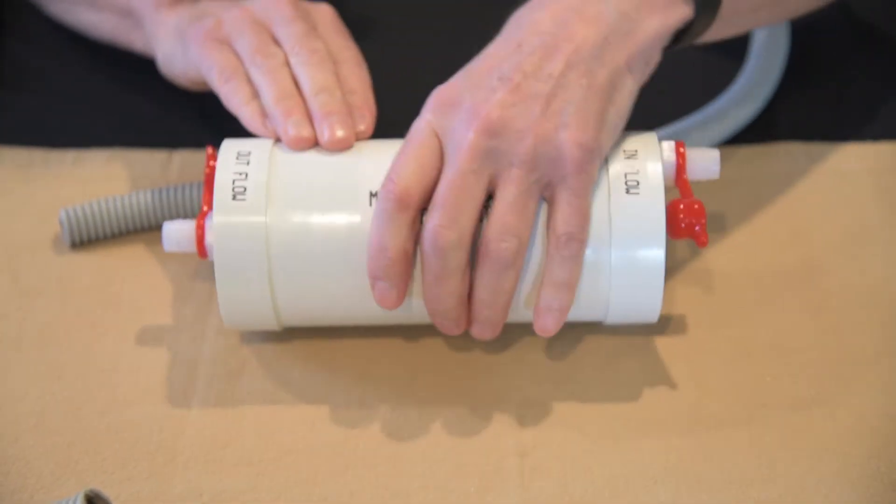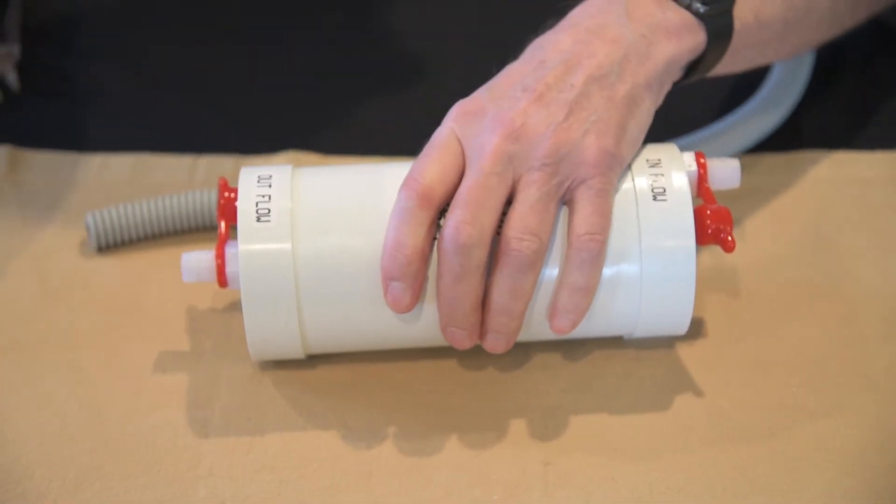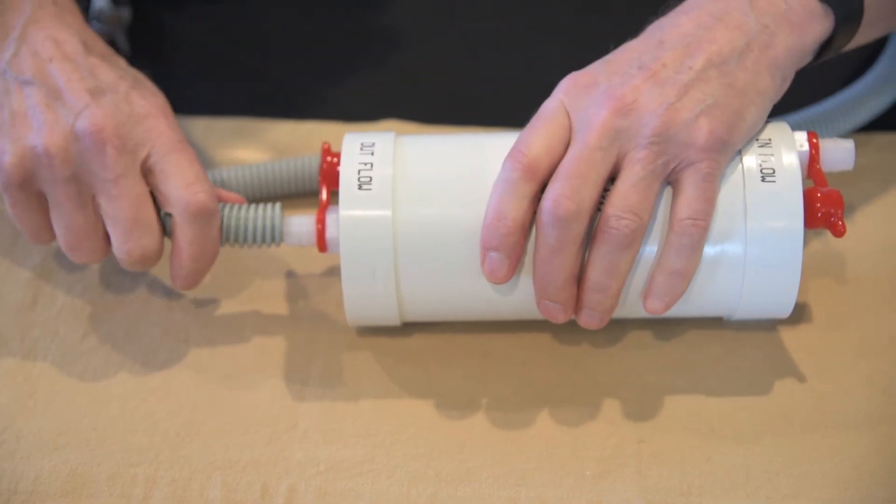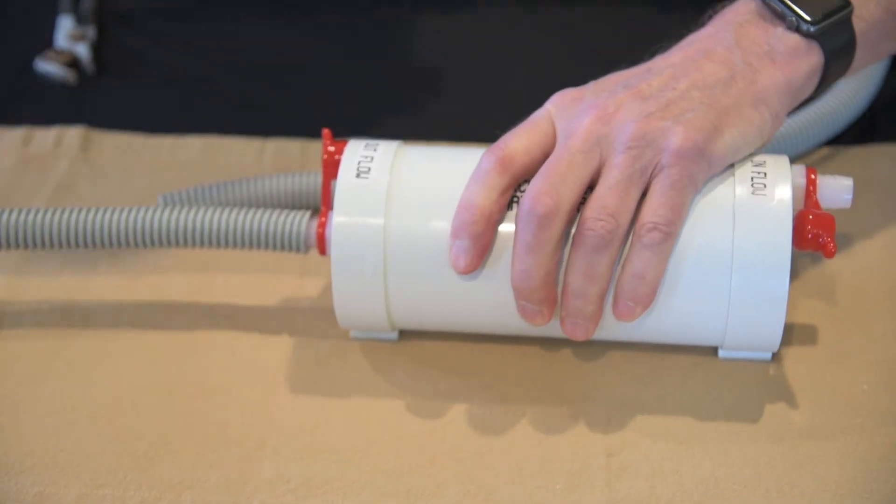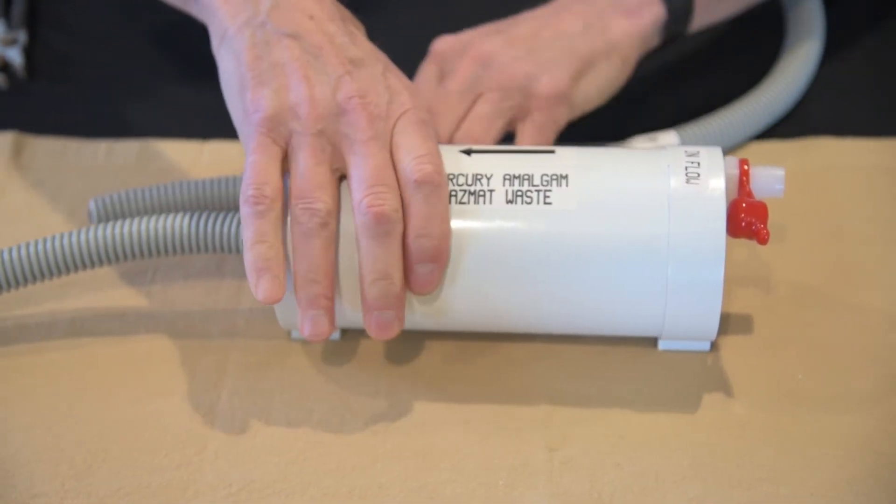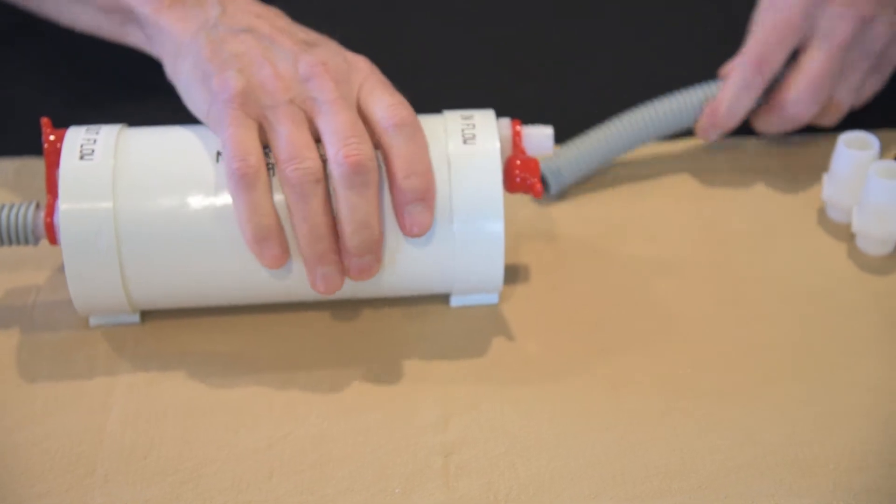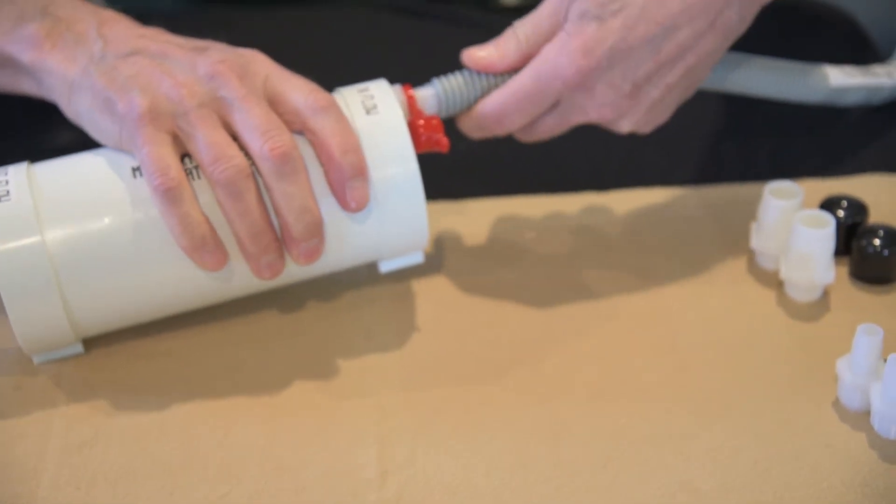So this is the outflow. And this is the line that's going to my vacuum pump. So I am going to twist that on like so. And this is from the sediment trap.